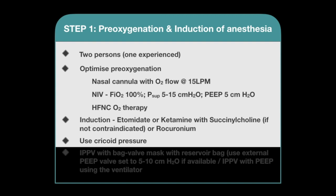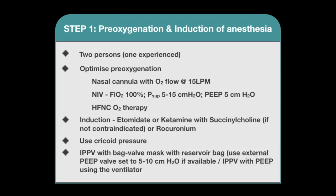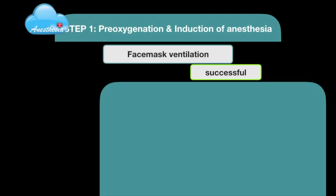Most ICU patients are considered to have a full stomach, and securing the airway with rapid sequence intubation seems logical. Cricoid pressure should be given but may be partially or completely released if ventilation is inadequate. Intermittent positive pressure ventilation may be performed using a bag-valve mask with reservoir bag using an external PEEP valve set to 5–10 cmH₂O, or using the ventilator maintaining cricoid pressure throughout. If face mask ventilation is successful, proceed to Step 2.